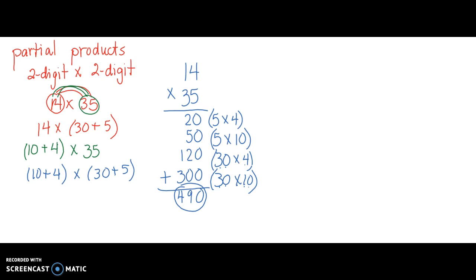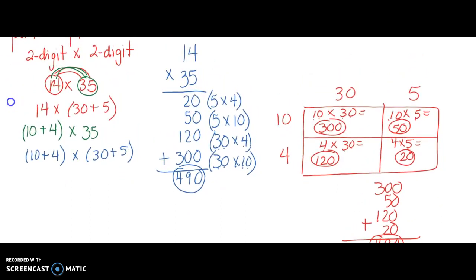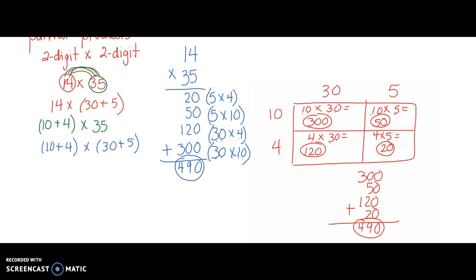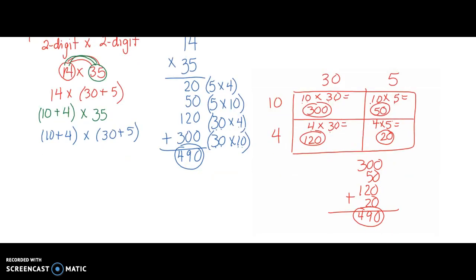So now how does this relate to the area model that we've seen before? You can see all of that on here. This area model in red, to the right of my partial products problem, shows the area model of 14 times 35. We see the expanded form of 14 here: 10 plus 4. And we see the expanded form of 35: 30 plus 5.